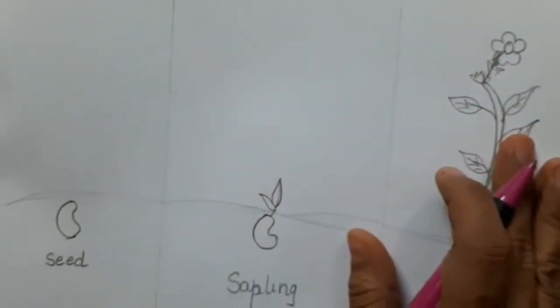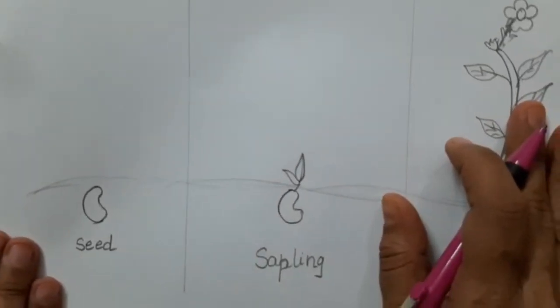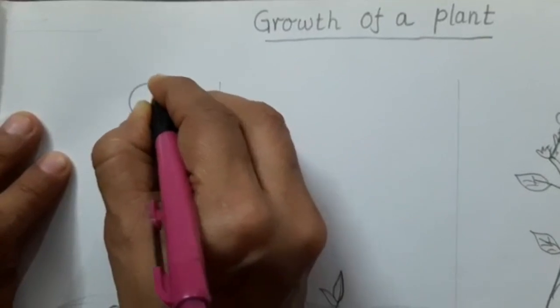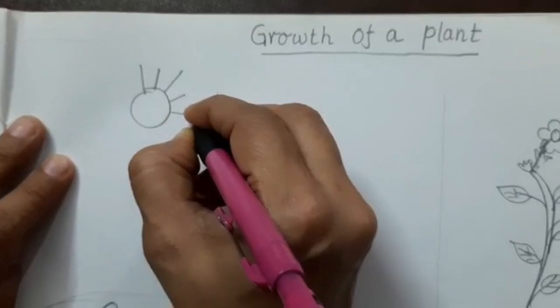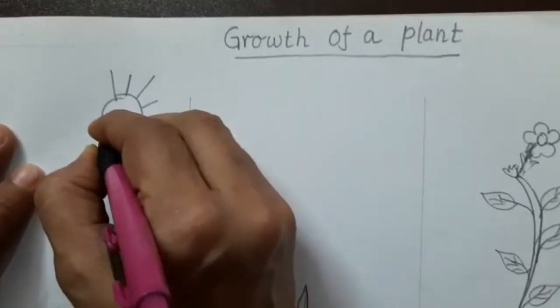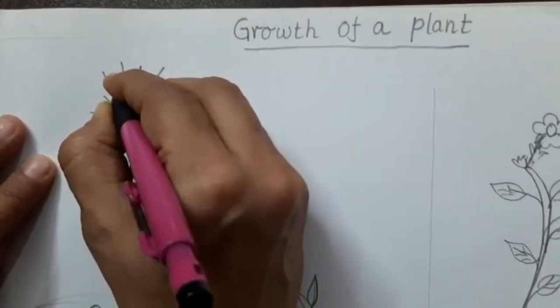So now tell me children, what does a plant or seed need to grow? It needs sunlight. So we are going to draw Mr. Sun.